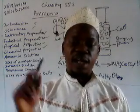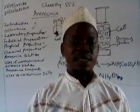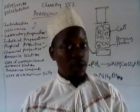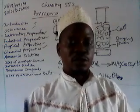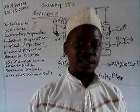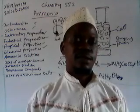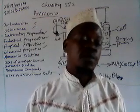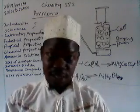As a reducing agent, ammonia is capable of decolorizing acidified potassium tetraoxomanganate(VII) (KMnO₄), turning acidified potassium dichromate(VI) from orange to green, and turning iron(III) chloride (FeCl₃) from brown to green. These are typical ways of identifying reducing agents in the laboratory, and ammonia is capable of doing that.